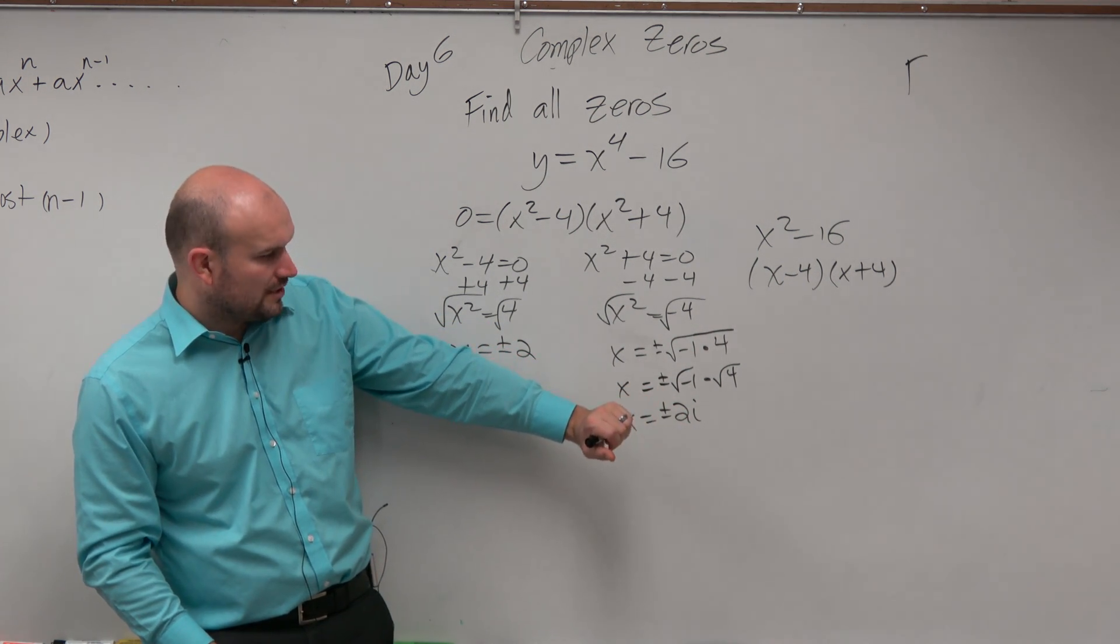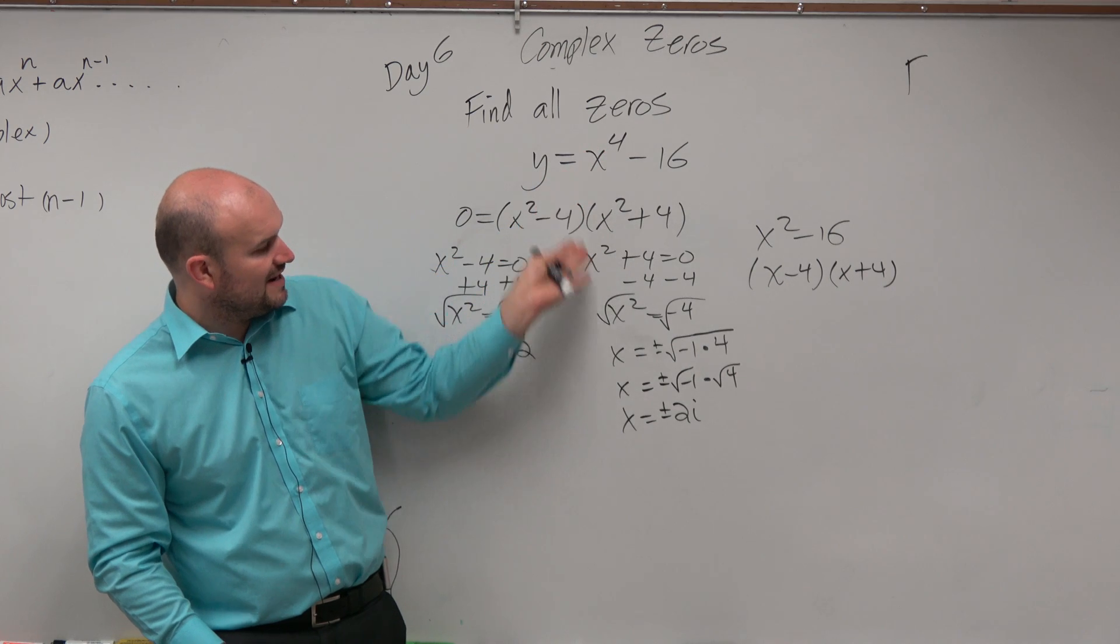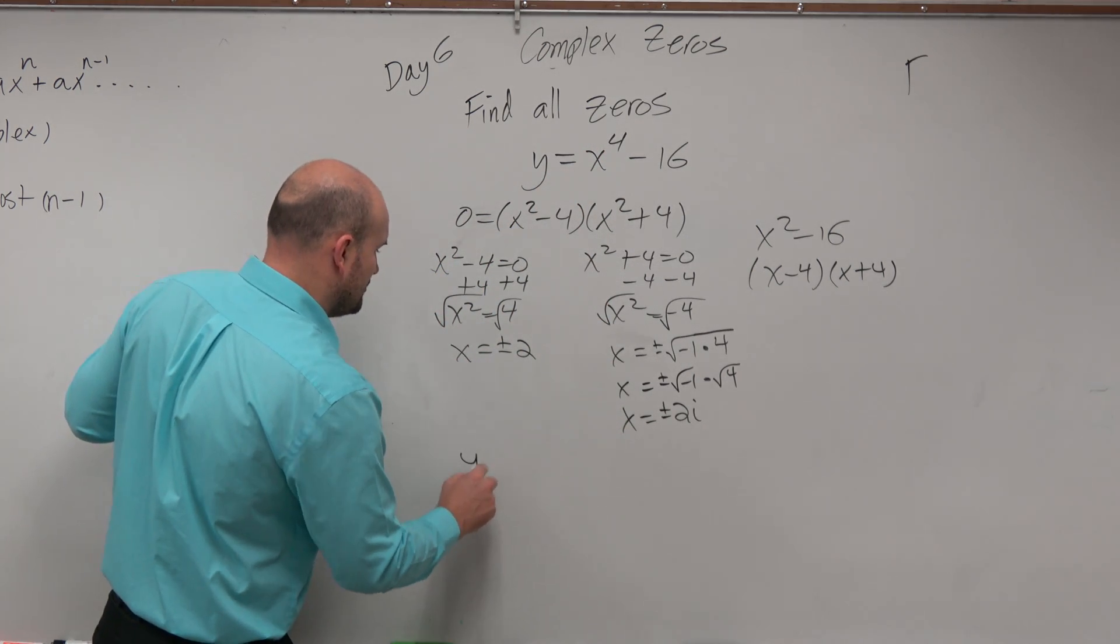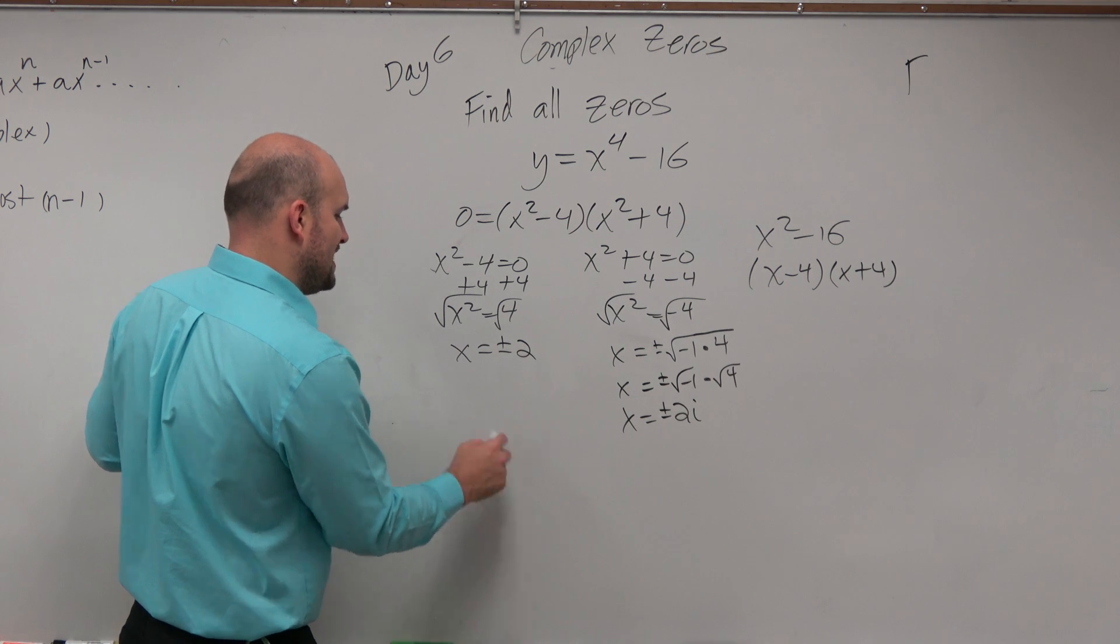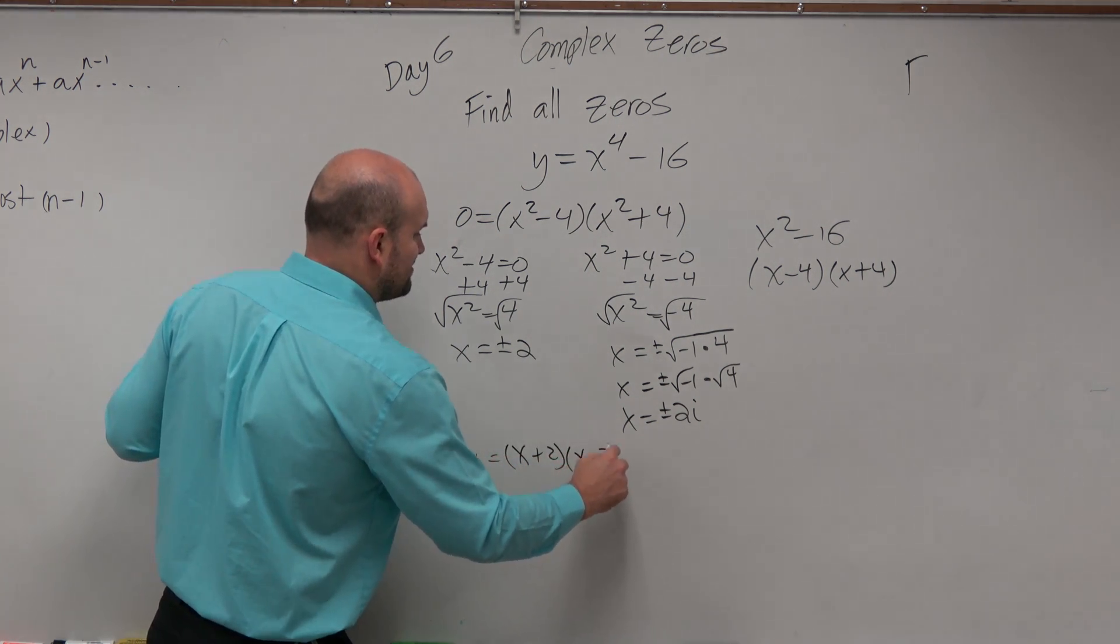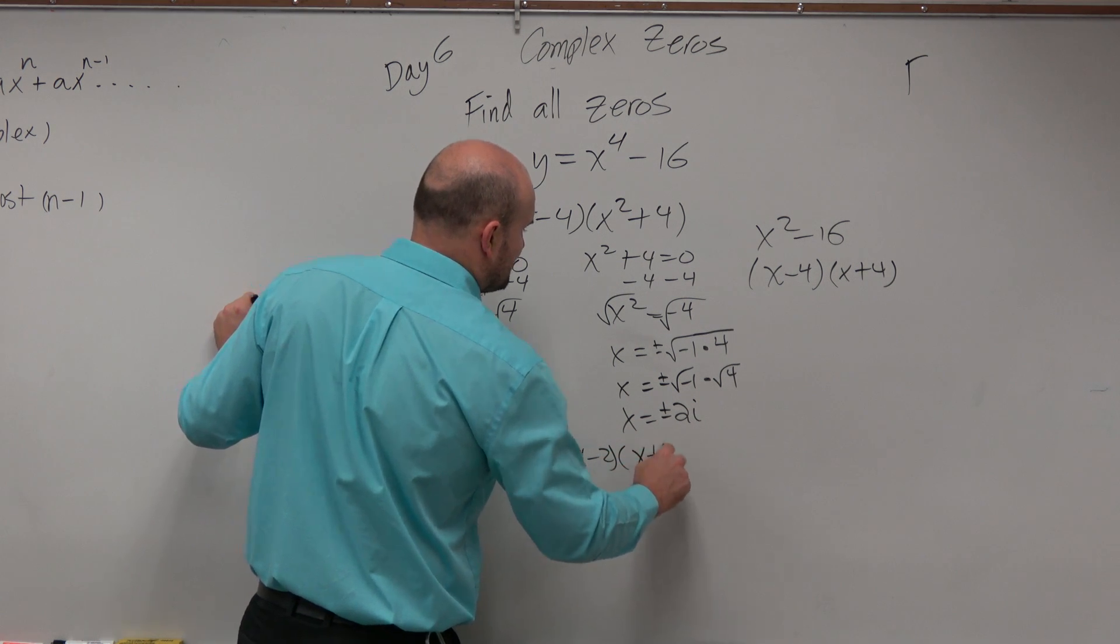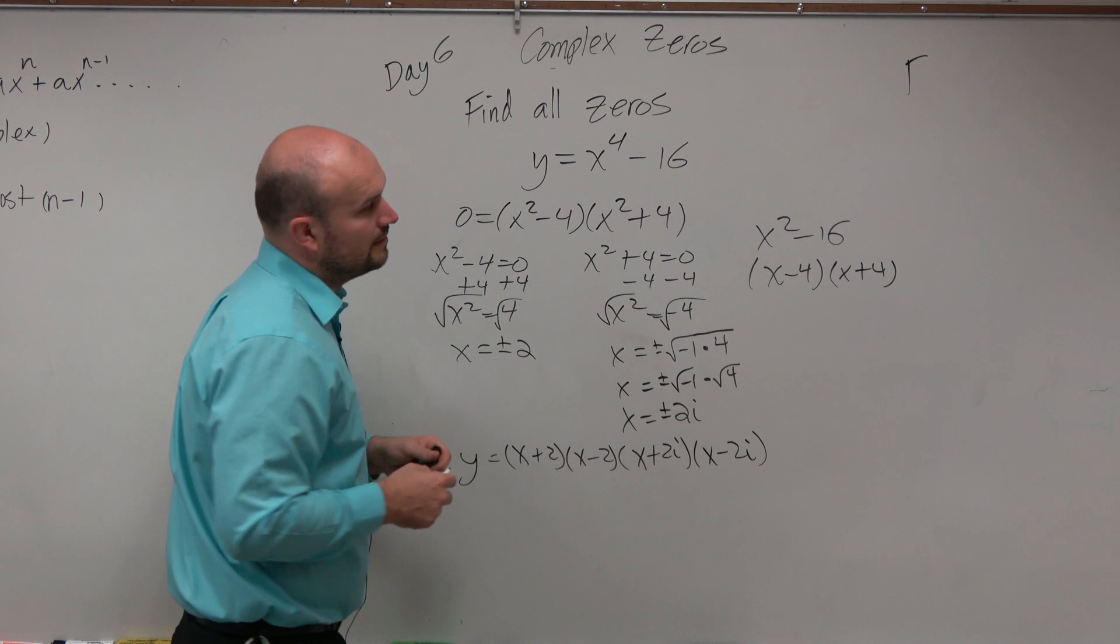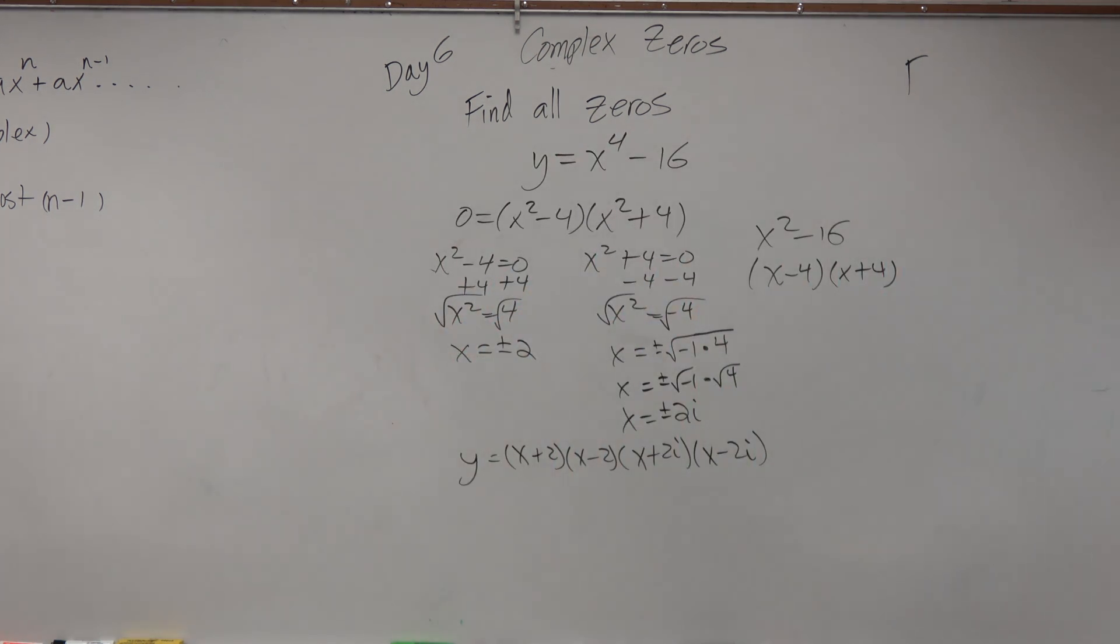Then the other thing if we want to look at this is we defined all the zeros we got just so we could write this back as linear factorization. So what I'd do is just set these all back equal to x and then equal to zero. So I could write this as x plus 2 times x minus 2 and then x plus 2i times x minus 2i. OK, so that's finding the zeros and then rewriting it back as linear factorization.